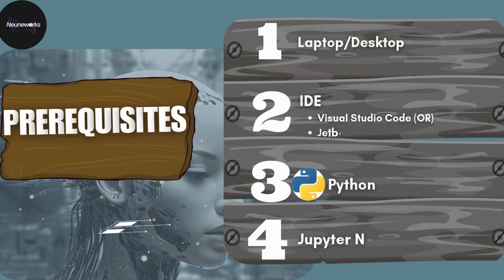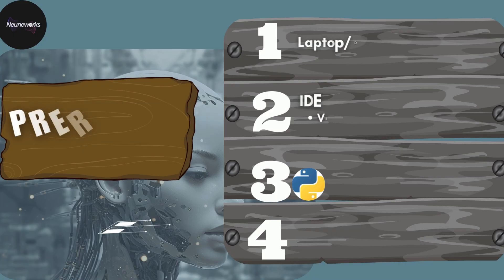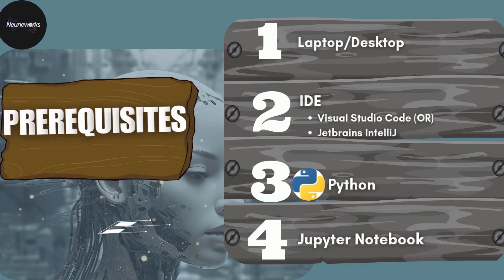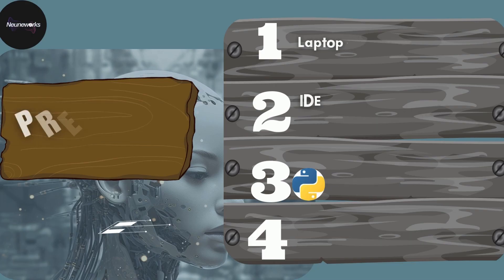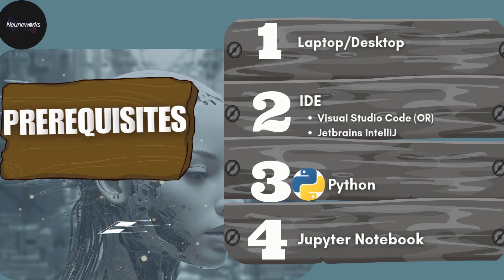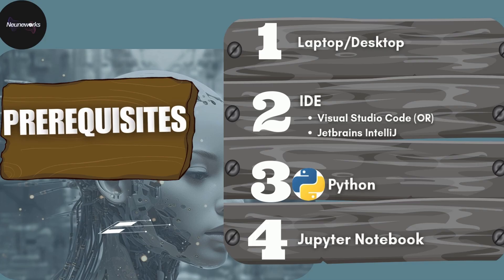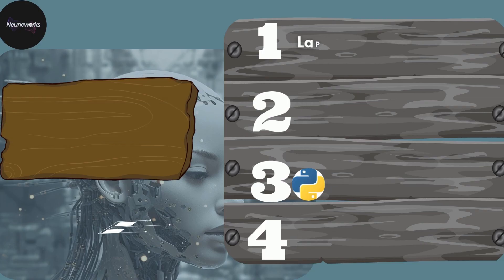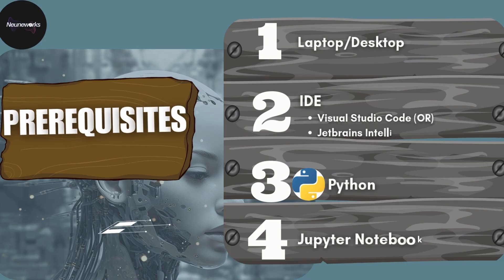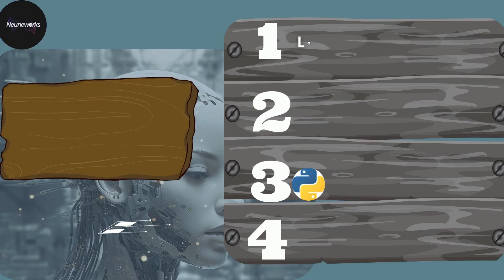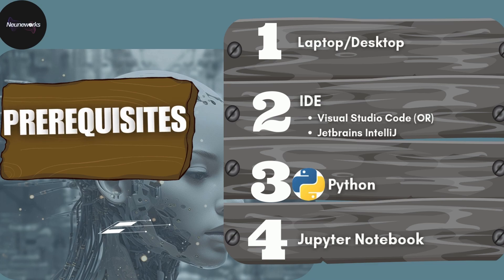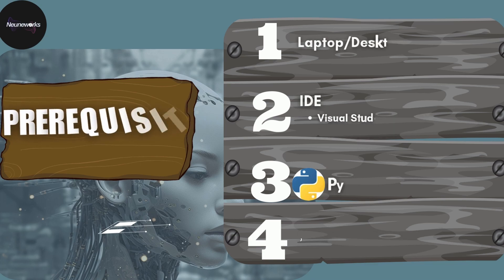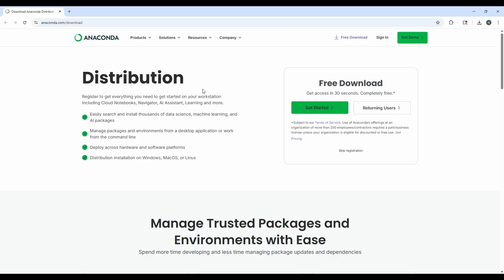Next, you need a good integrated development environment, that is IDE. There are many IDEs used by data scientists like Visual Studio Code and JetBrains IntelliJ. Then, of course, we need to have Python installed on your machine. If you are planning to build a project on a local computer, then you should have Jupyter notebook installed — it is widely used by data scientists and machine learning engineers. You can install Jupyter notebook using Anaconda, which can be downloaded from the Anaconda website.